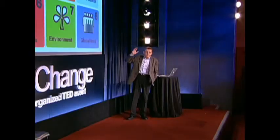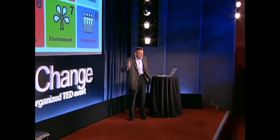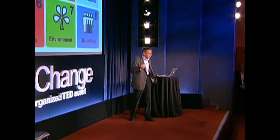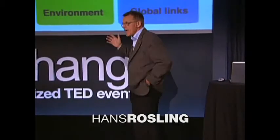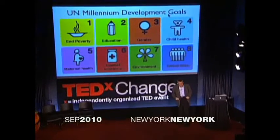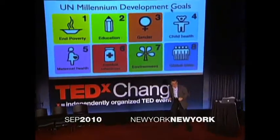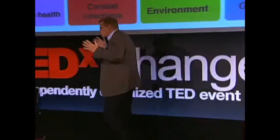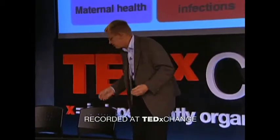The United Nations have defined goals for the progress of countries, called Millennium Development Goals. The reason I really like these goals is that there are eight of them. By specifying eight different goals, the United Nations have said that there are so many things needed to change in a country in order to get a good life for people.